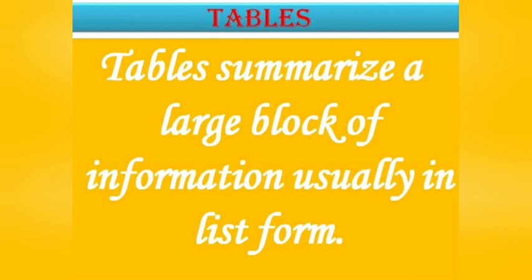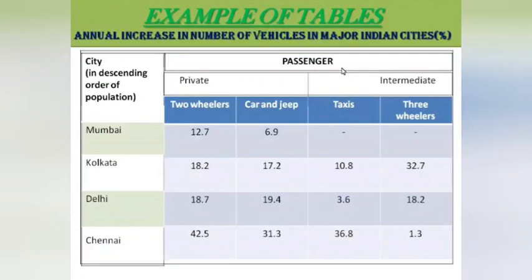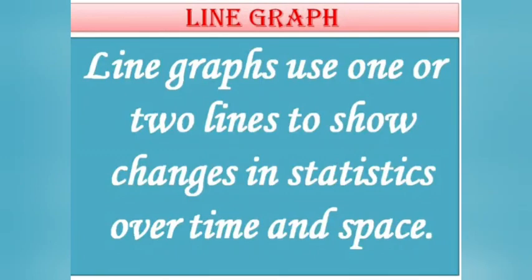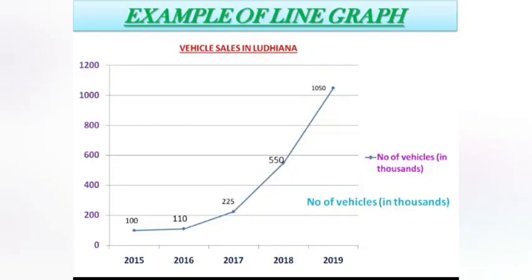Now, table summarization: a table summarizes a large block of information, usually in list form. So let's look at tables. The table shows the number of vehicles increasing every year. You must have seen many such tables — so how do we analyze these tables? For example, this is a line graph showing year-wise vehicle sales in Ludhiana, showing how many vehicles came on the road, in thousands, year-wise.